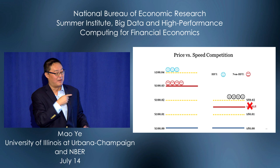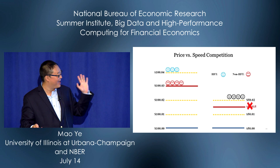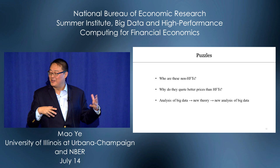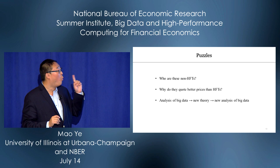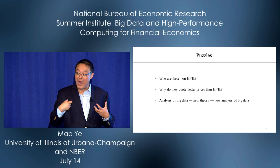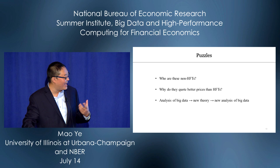But where is the theory? We were essentially waving our hands. After publishing the paper, it raises more puzzles. Number one: who are these non-HFTs? Are they humans? Probably not. Number two: why do they quote better prices than HFTs? HFTs must have a reason they don't compete more aggressively on price. That's the theory part. We start with big data analysis, develop new theory, and then run new analysis with big data.